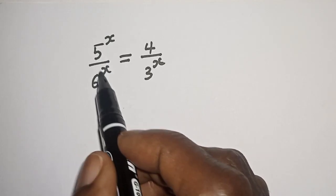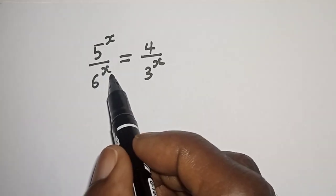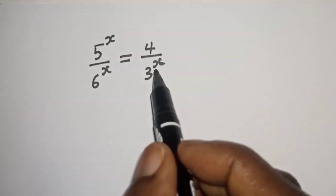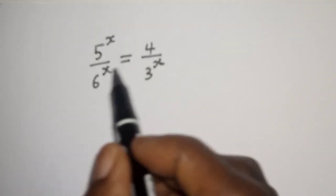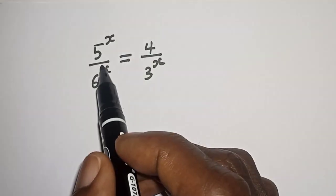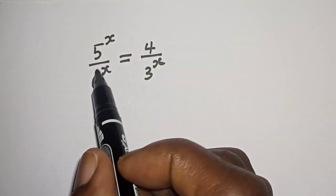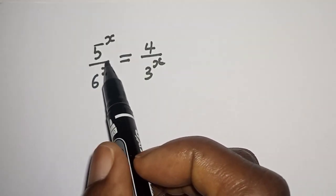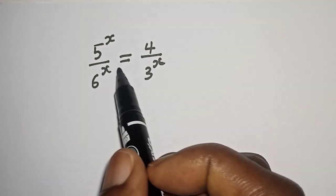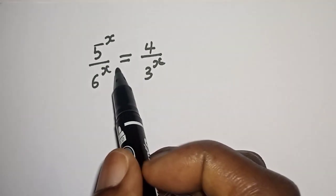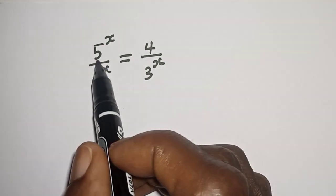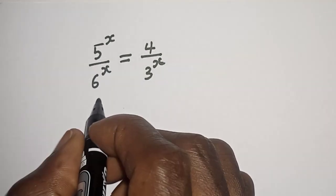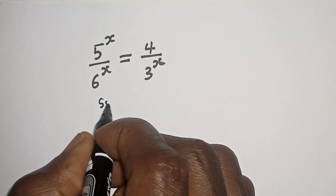5 raised to power s divided by 6 raised to power s is equal to 4 divided by 3 raised to power s. Hi everyone, welcome to my class. In this class, we want to find the value of s from this given equation. But before we proceed, please don't forget to like, share, comment and subscribe.